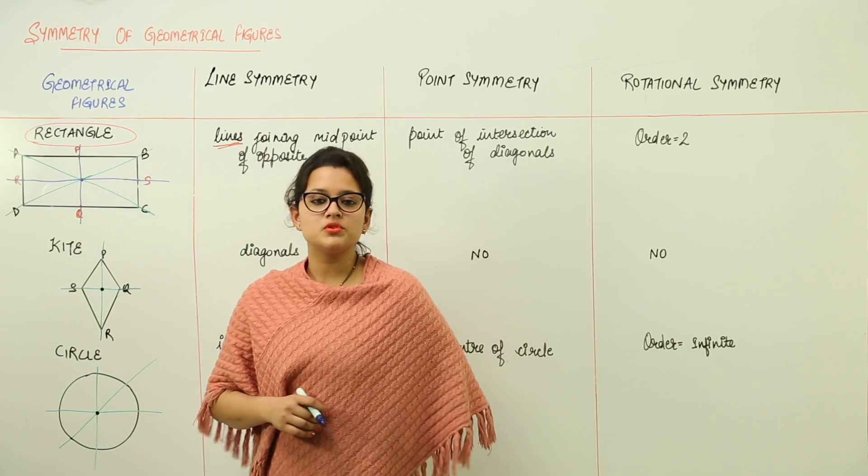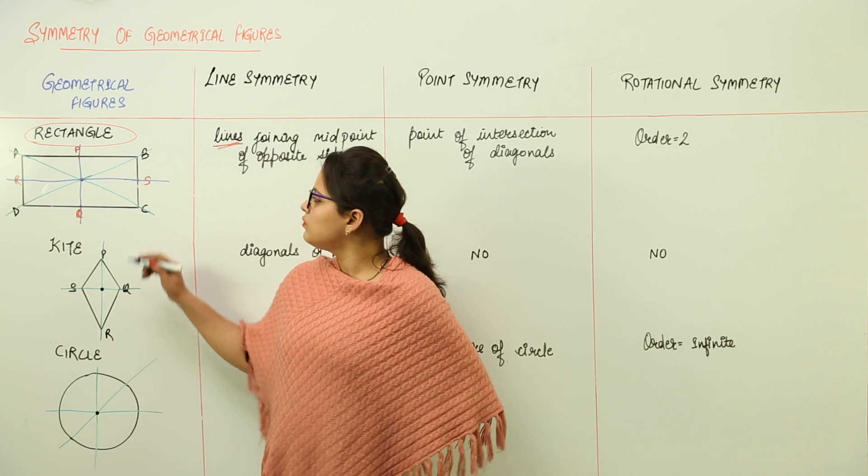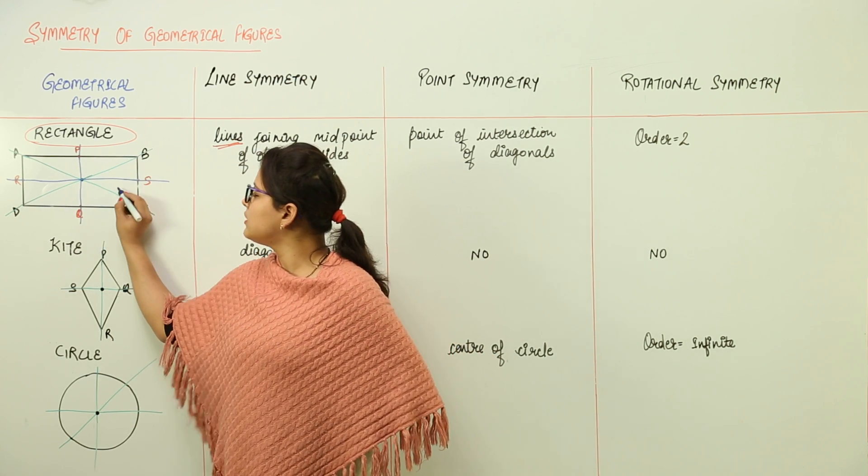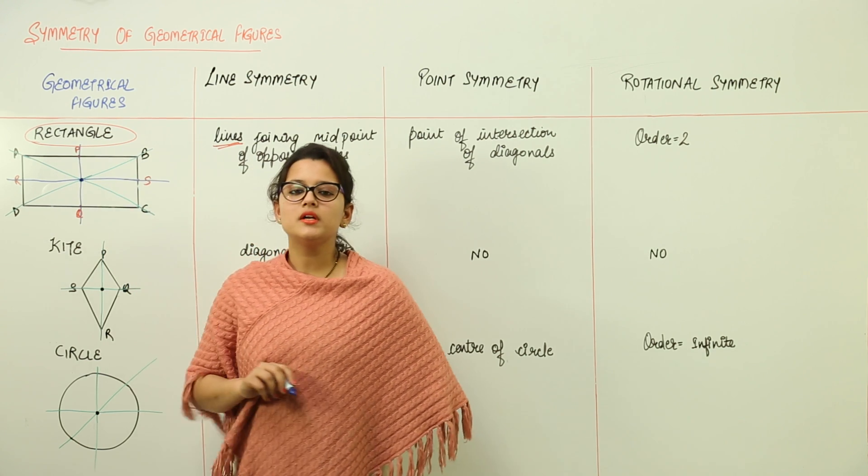What about the point symmetry? The point of intersection of diagonals, the point where the diagonals meet. Now the green ones are your diagonals. So what is the point where diagonals are meeting? This is the point.